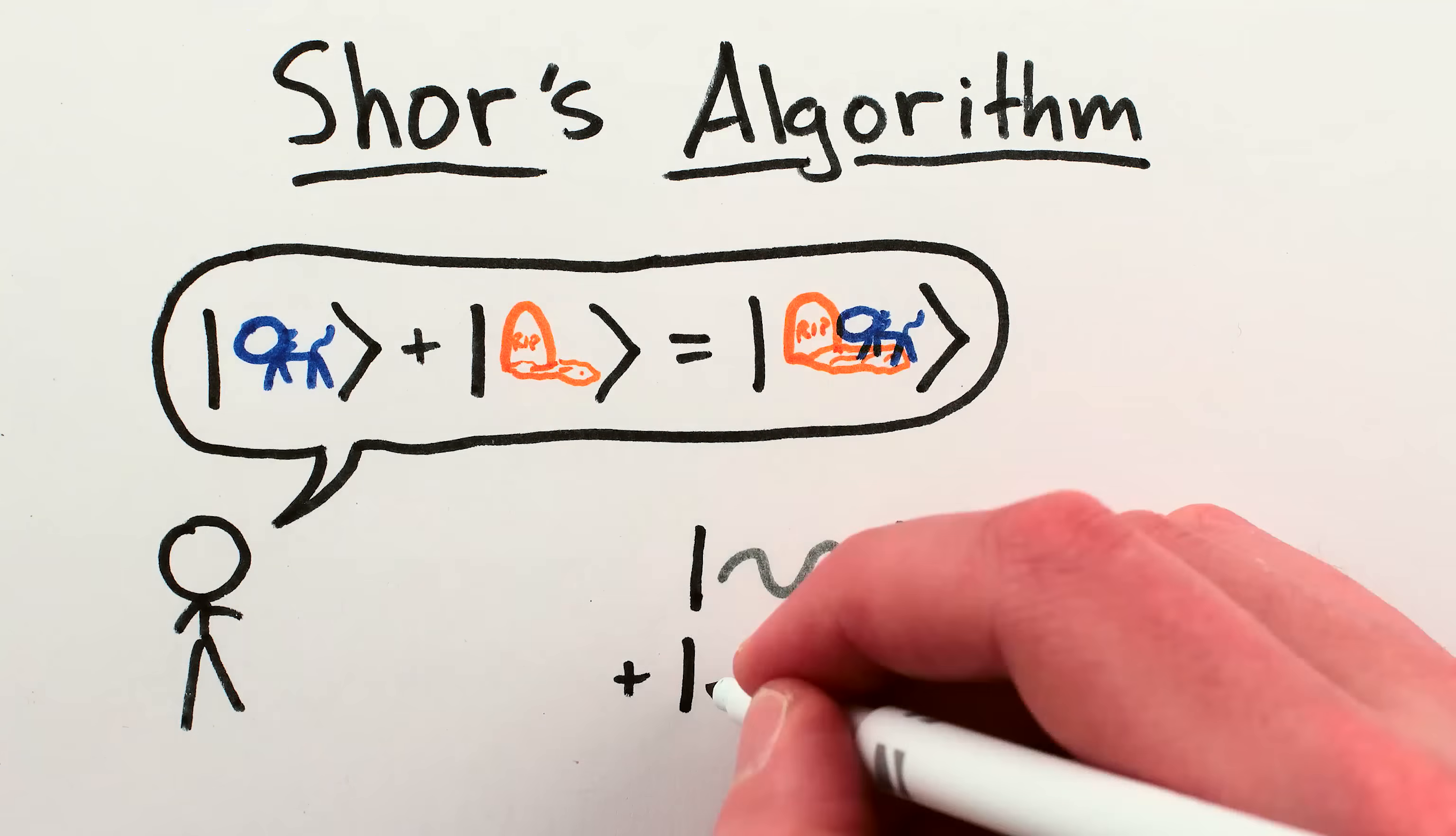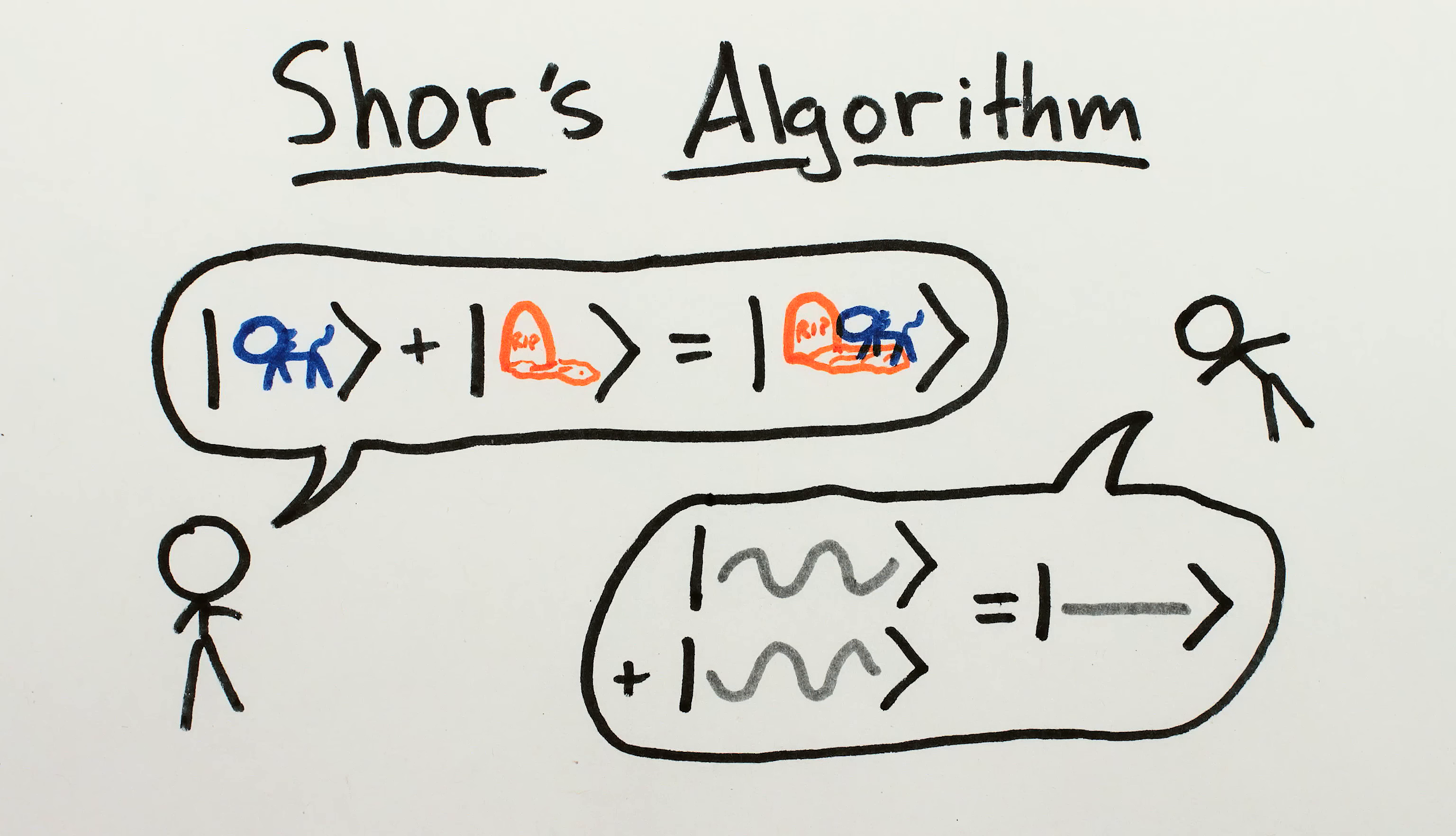Well, actually, it's due to quantum superposition and interference. They're just taken advantage of by an algorithm developed by Peter Shor, which I'm now going to attempt to explain.